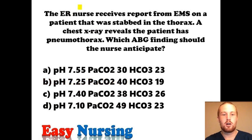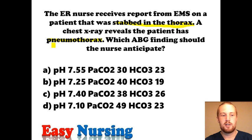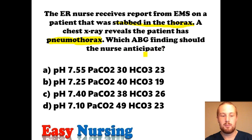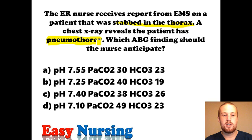Let's move on to the next question. You're an ER nurse receiving a report from EMS. You have a patient who was stabbed in the thorax. They do a chest x-ray and reveal the patient has a pneumothorax — pneumo meaning air around the thorax, so you have air around the lungs. Which ABG finding would we anticipate? This patient has respiratory issues with the pneumothorax.